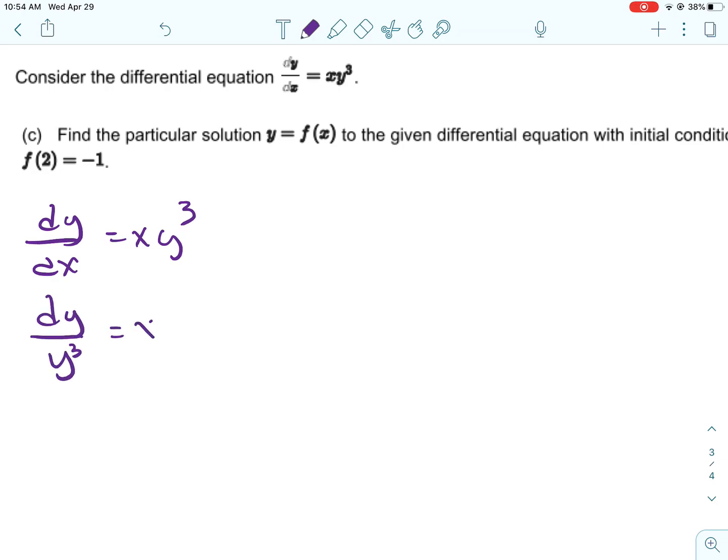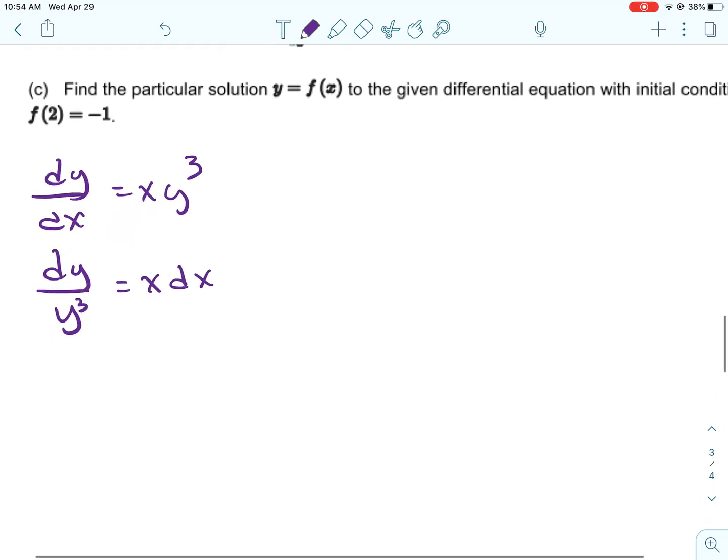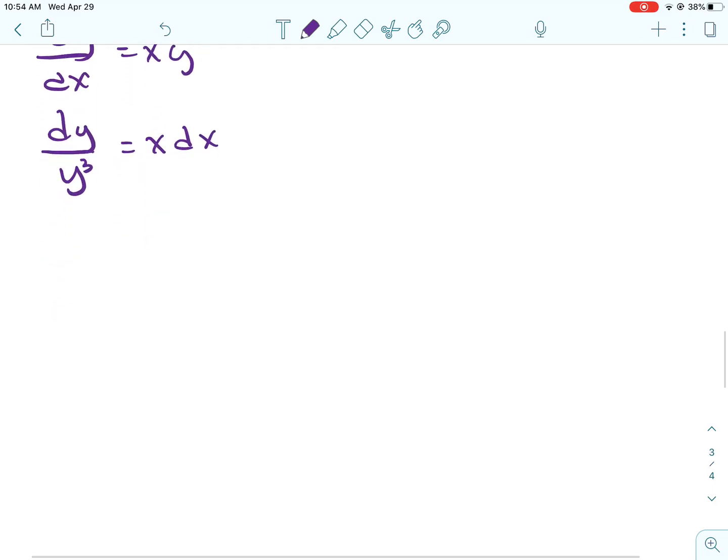All solution curves in quadrant 4 are concave down. Okay, and then for C, we're going to solve it for our initial condition 2, or yeah, the point is 2, negative 1. Okay, so here we go again. Let's separate the variables.